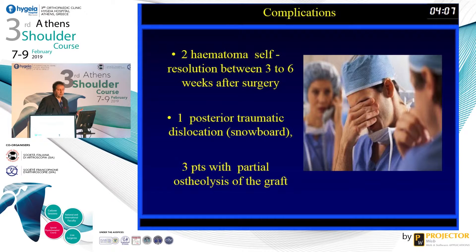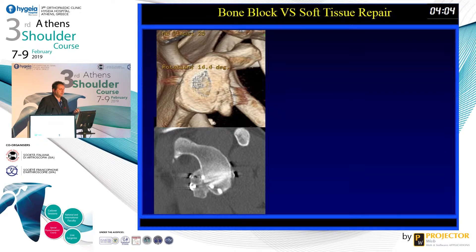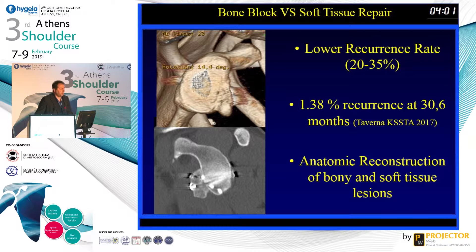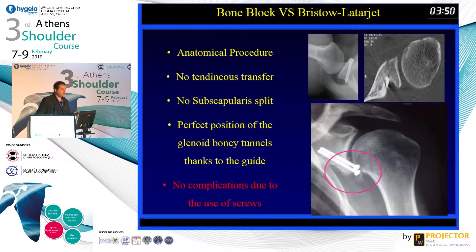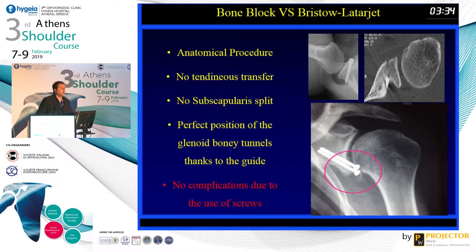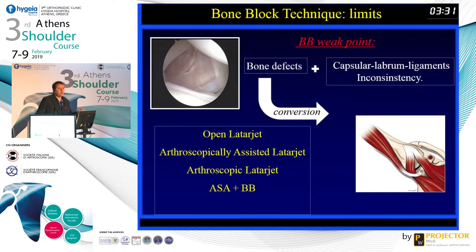This technique has very few complications and very mild morbidity. The advantage of the bone block over soft tissue repair is a lower recurrence rate and an anatomical reconstruction of the joint — addressing both soft tissue and bone simultaneously. Versus Bristow-Laterge, it is anatomical with no tendinous transfer, and following these indications there is no need to mobilize the coracoid or cojoined tendon. The perfect positioning of the graft using buttons avoids problems with screw positioning.